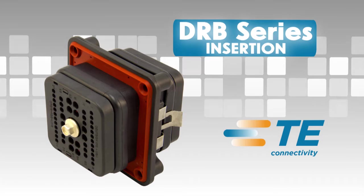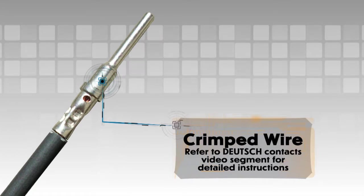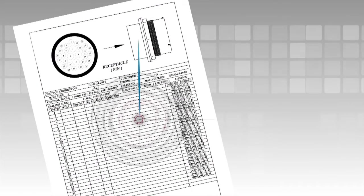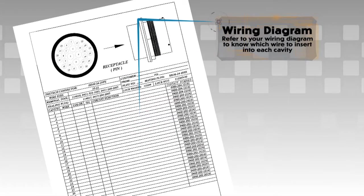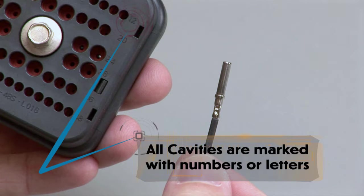DRB Insertion. Begin with a crimped wire. For assistance, refer to the Deutsch Context video segment for detailed instructions. Refer to your wiring diagram to know which wire to insert into each cavity. All cavities are marked with numbers or letters, depending on the design.